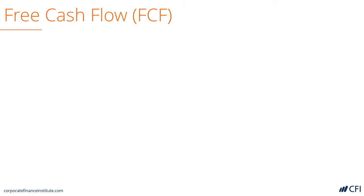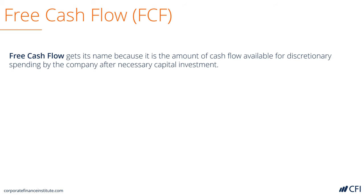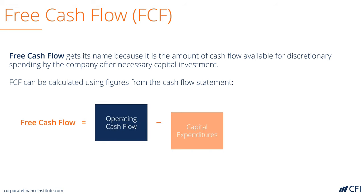Now let's look at free cash flow. Free cash flow builds on cash from operations or operating cash flow, but it takes into account the capital expenditures that are required. So it takes operating cash flow and deducts capital expenditures. This is a very generic cash flow metric — we're not specifying if it's exactly the cash flow to equity or to the firm. It's just a generic level of free cash flow.